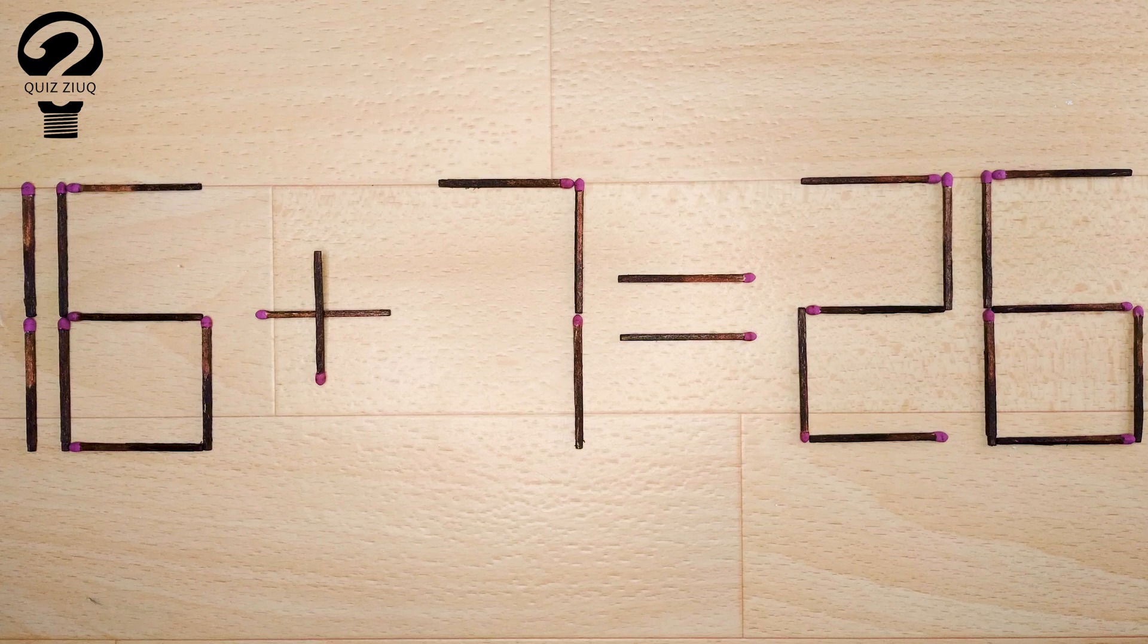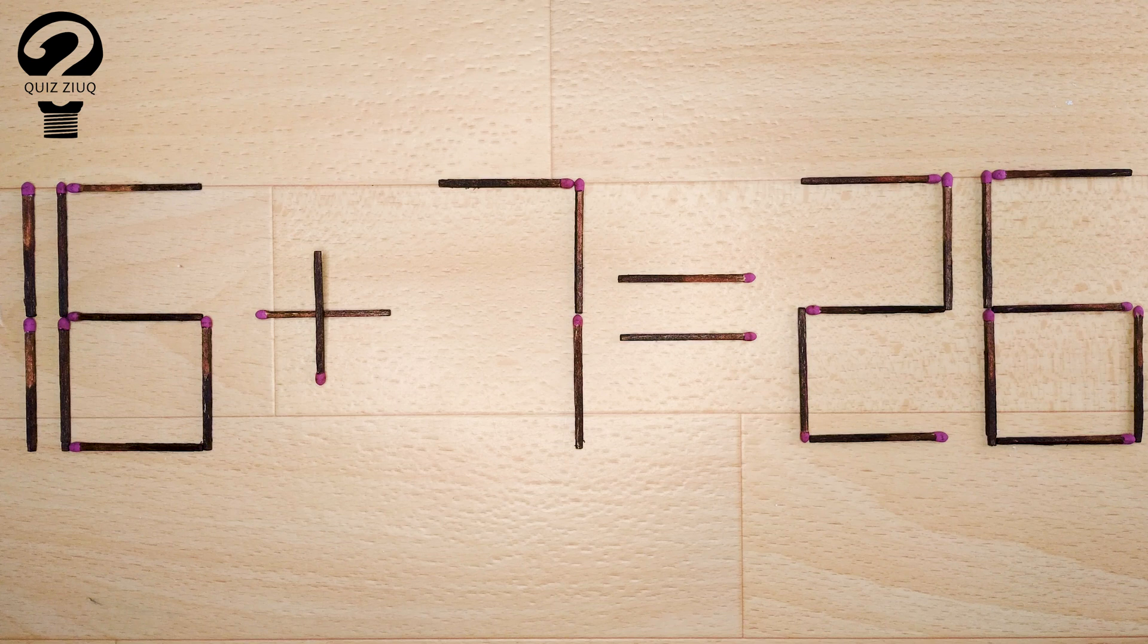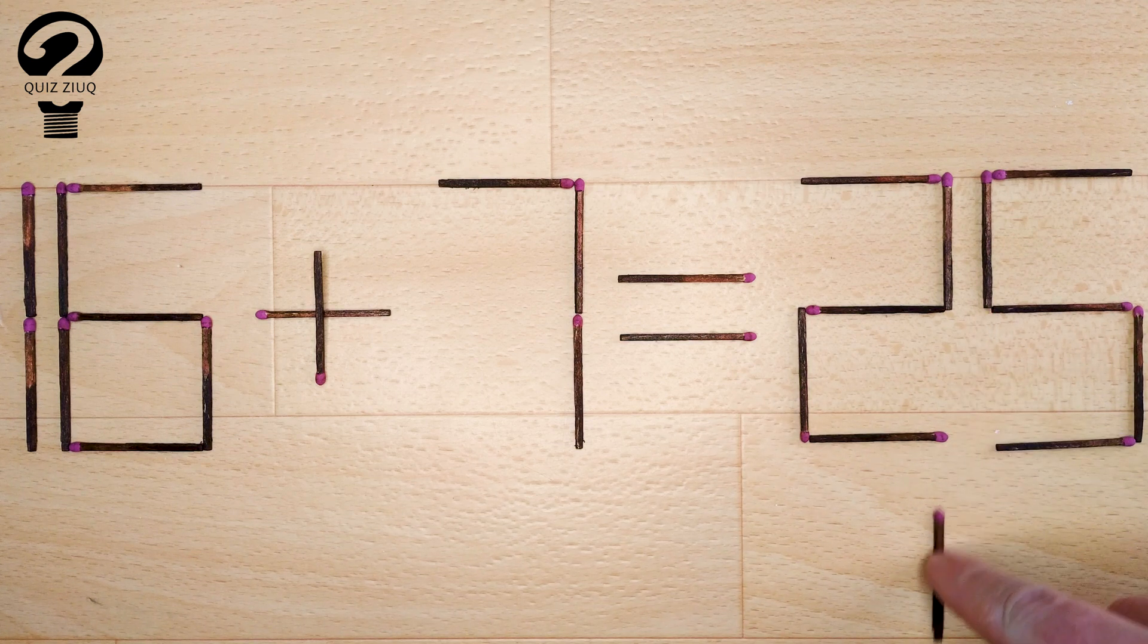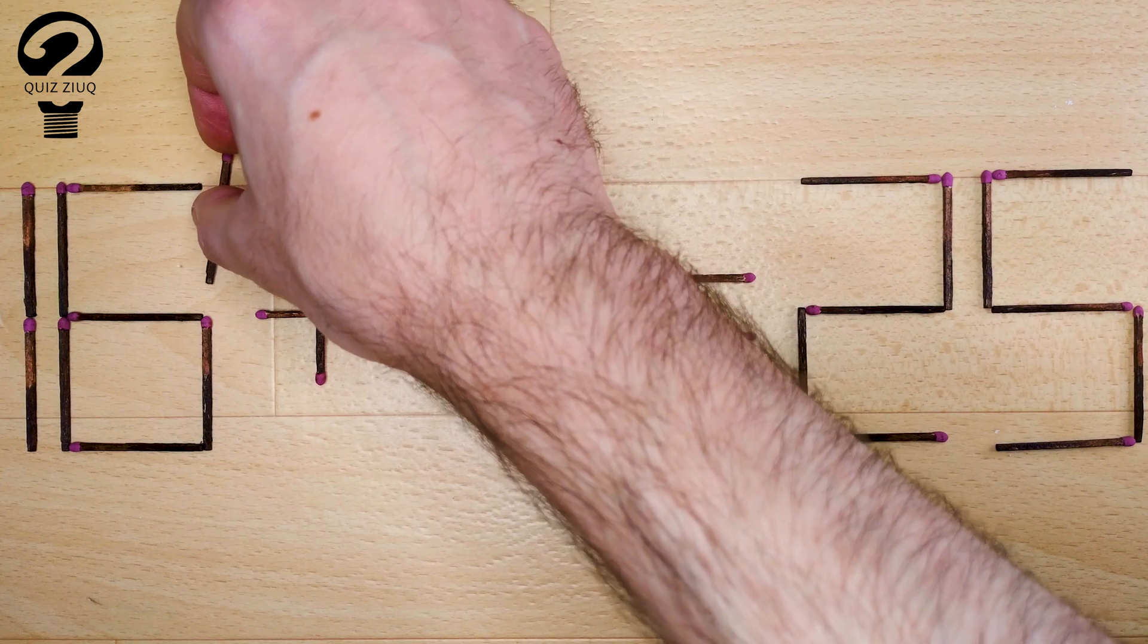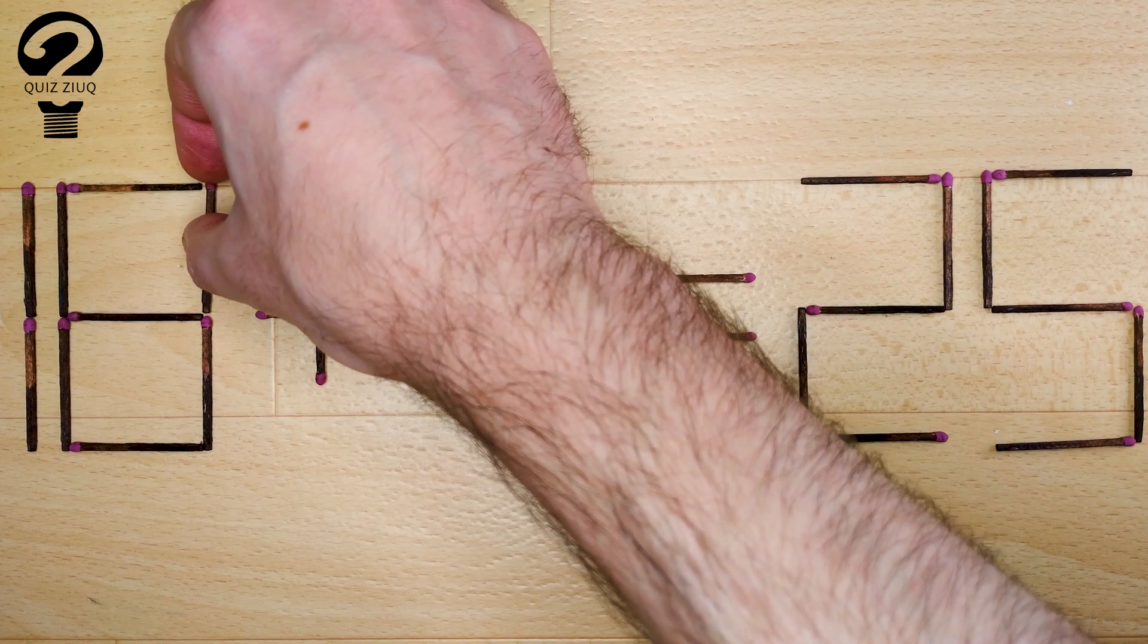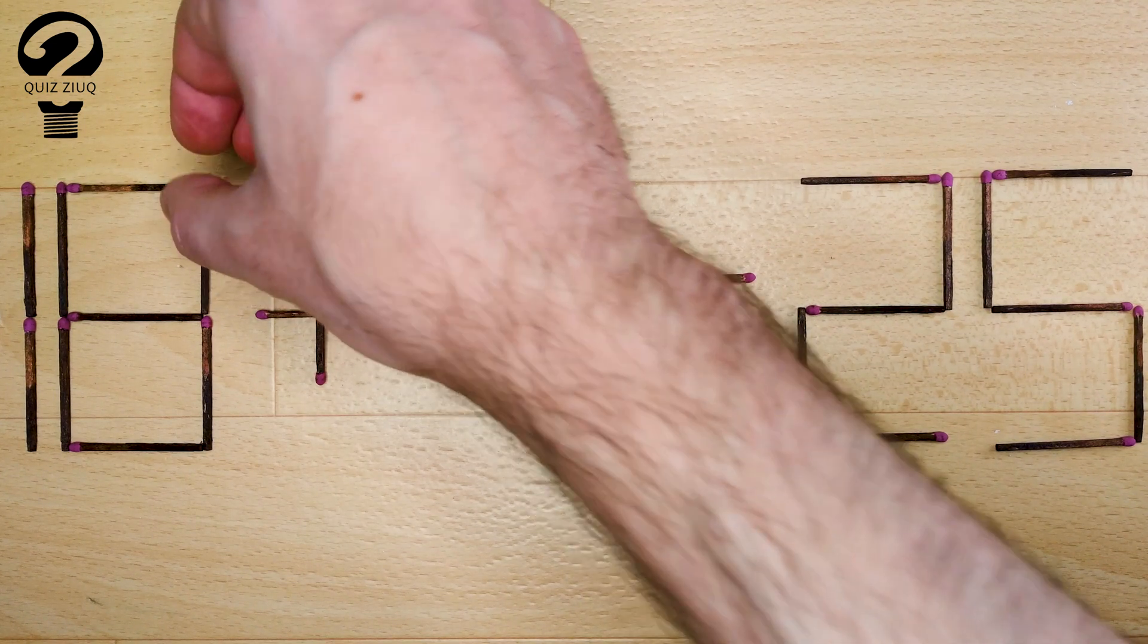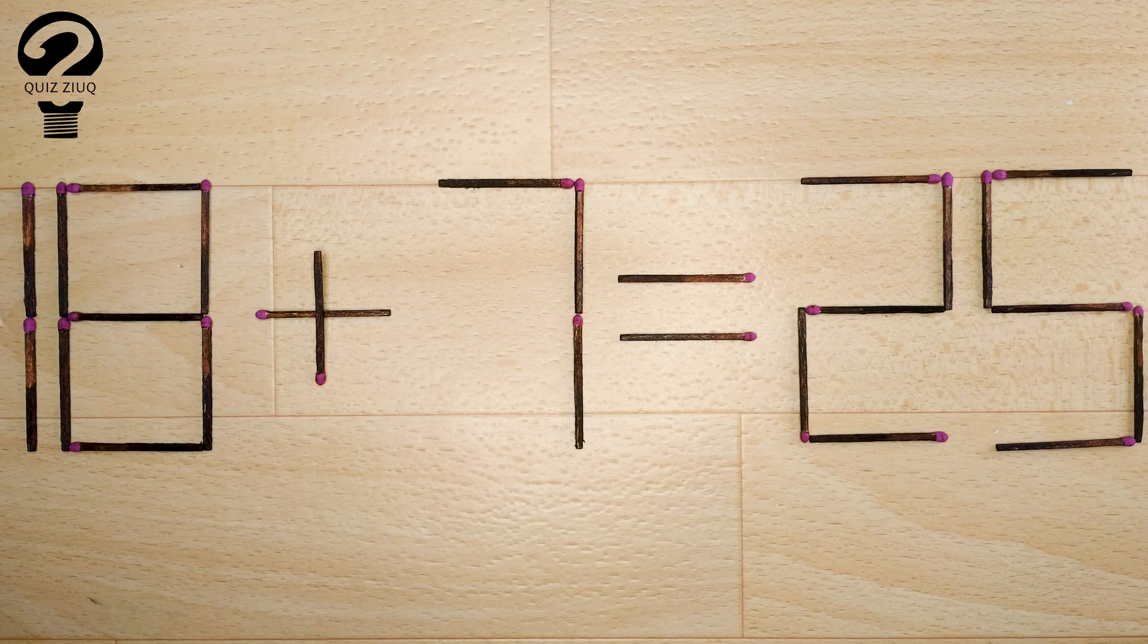How is this little puzzle solved? We just need to move one matchstick. And now when we check, 18 plus 7 equals 25. 25 equals 25. Our equation is correct. The puzzle is solved.